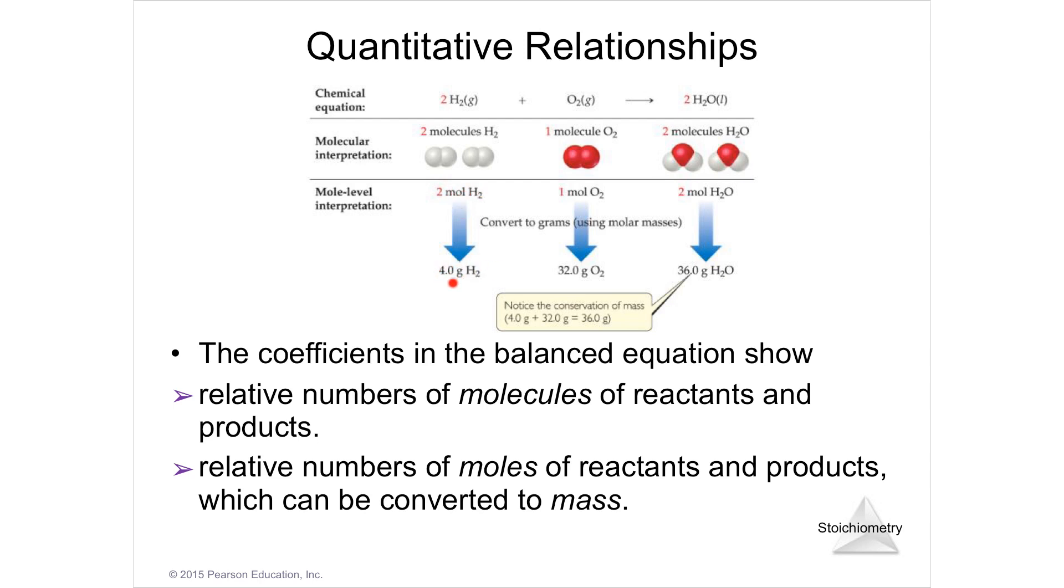2 moles of hydrogen, for instance, is an amount of 4 grams. It weighs 4 grams. 1 mole of oxygen is 32 grams. 2 moles of water is 36 grams. So if I'm given a certain amount of a reactant, for instance, I could find out how much of the product is actually being made. Extremely useful.